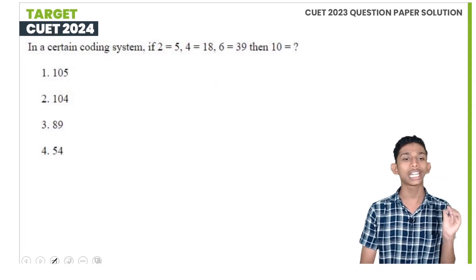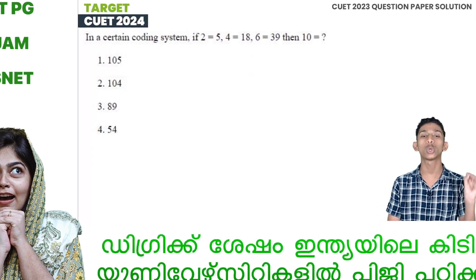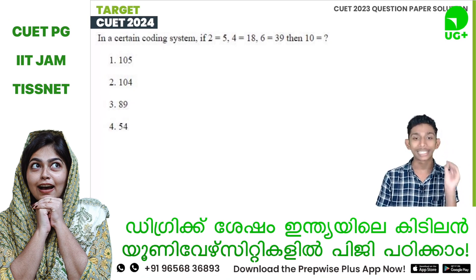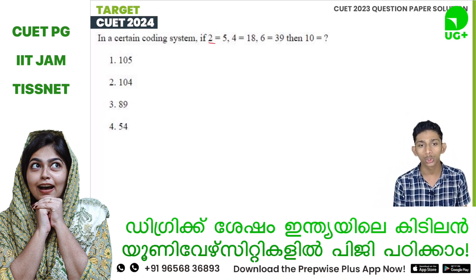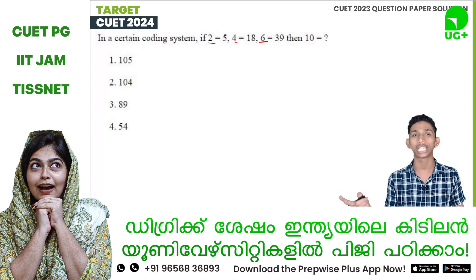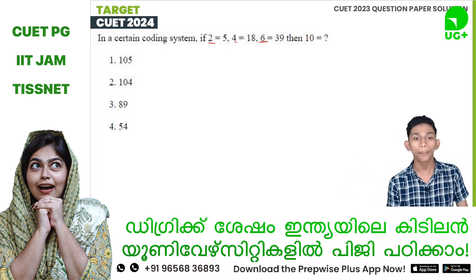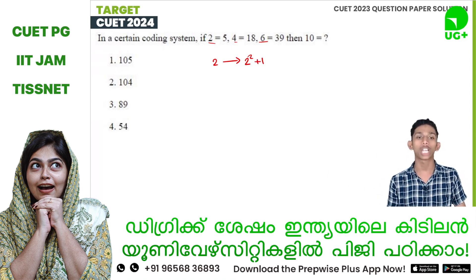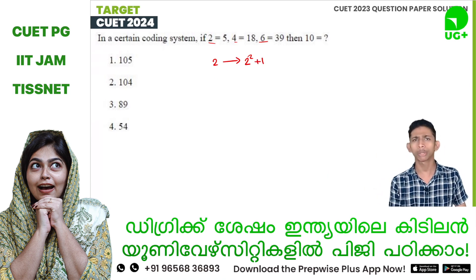Next question. In a certain code system, if 2 is equal to 5, 4 is equal to 18, and 6 is equal to 39, then what is 10 equal to? Let's look at the pattern. For 2: 2 squared plus 1 equals 5. That gives us the formula n squared plus n divided by 2.